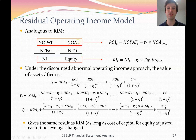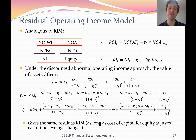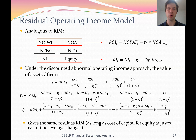Whereas in the Residual Income Model, we used Total Income and Total Net Assets. Both models derive from the Dividend Discount Model. The Residual Operating Income Model gives the same result as the Residual Income Model as long as the cost of capital for equity is adjusted each time leverage changes. In Lecture 11, if we have time, we'll talk about how to ensure the two models give the same valuation estimate.